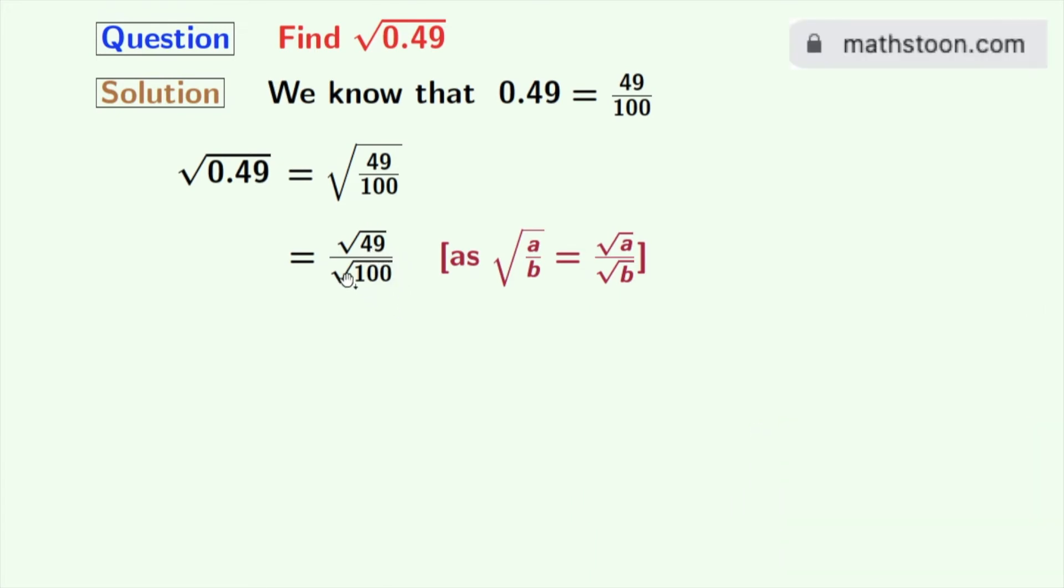Now if we rewrite this fraction as a decimal number, we get 7 by 10 is equal to 0.7. So finally, we get square root of 0.49 is equal to 0.7, and this is our final answer.